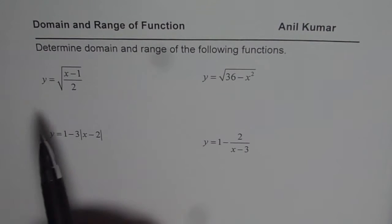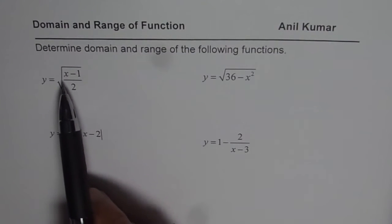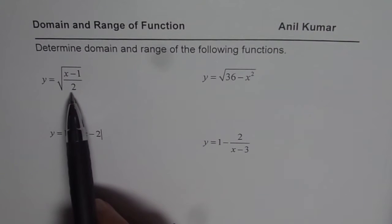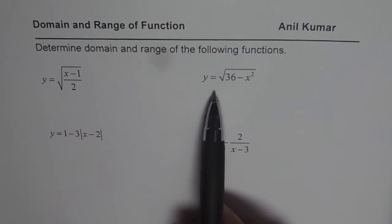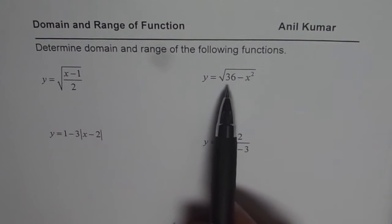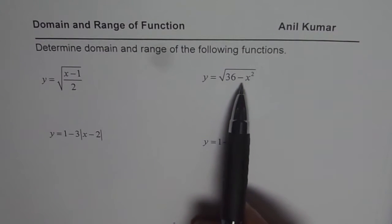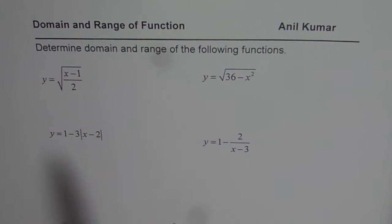The first one is square root of (x minus 1) divided by 2. Then we have y equals square root of 36 minus x squared.